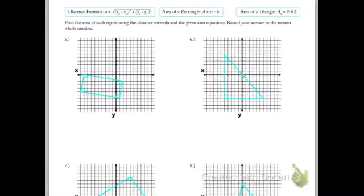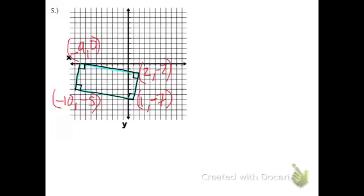All right, moving on to the area portion of the perimeter and area using distance formula assignment. On each of these, remember these two formulas here. If it's a triangle, you do base times height and then divide by 2 or times by one half. If it's a rectangle, you just times the base times the height and you have the area.